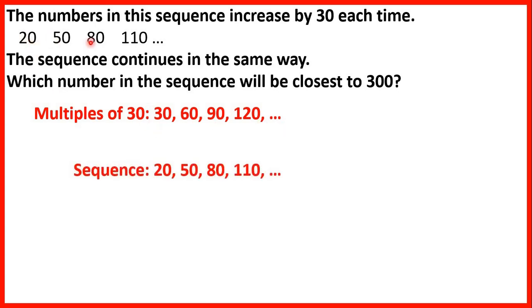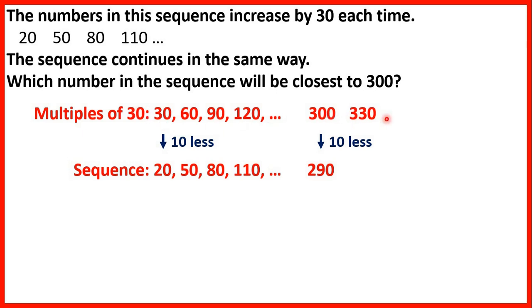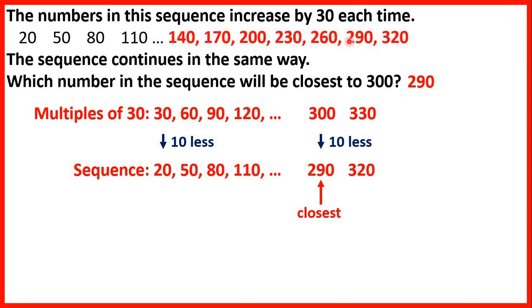Notice that the numbers in the sequence are always 10 less than a multiple of 30. We know that 300 is a multiple of 30 because 30 times 10 is 300, so the number in the sequence will be 10 less, which is 290. After 300 in the multiples of 30 we have 330, so in the sequence 10 less will be 320. But 290 is closer to 300 than 320 is, so the closest number in the sequence is 290. You could also just keep adding 30 each time to reach 290.